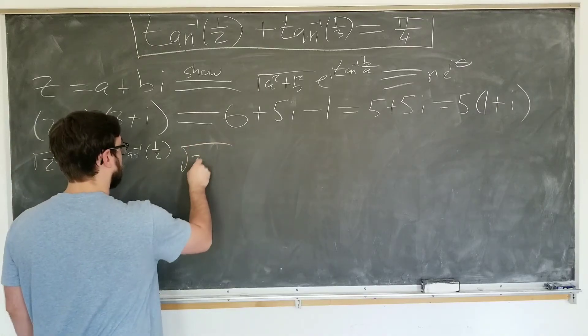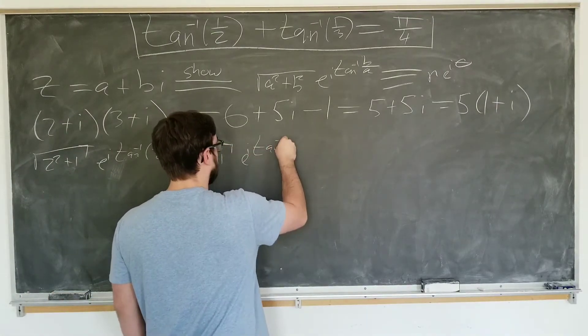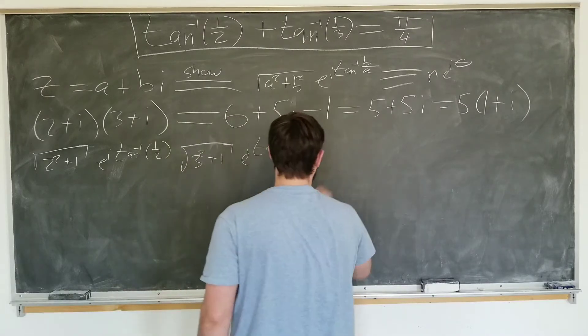square root of 3 squared plus 1, e to the i inverse tangent of one-third, is equal to,